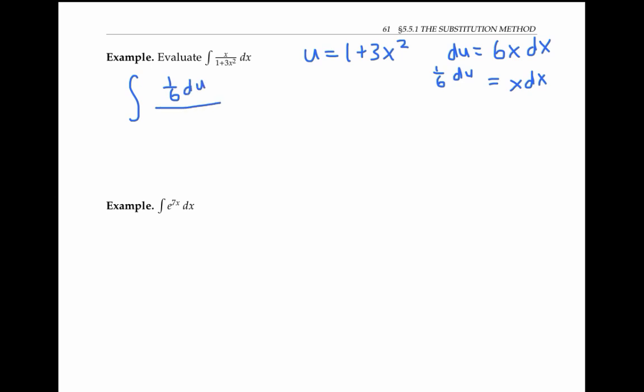And then in my denominator, my 1 + 3x² becomes u. I can rewrite this as one sixth times the integral of one over u du. And I recognize that the antiderivative of one over u is ln absolute value of u. Substituting back in for u, I get a final answer of one sixth ln|1 + 3x²| + C.